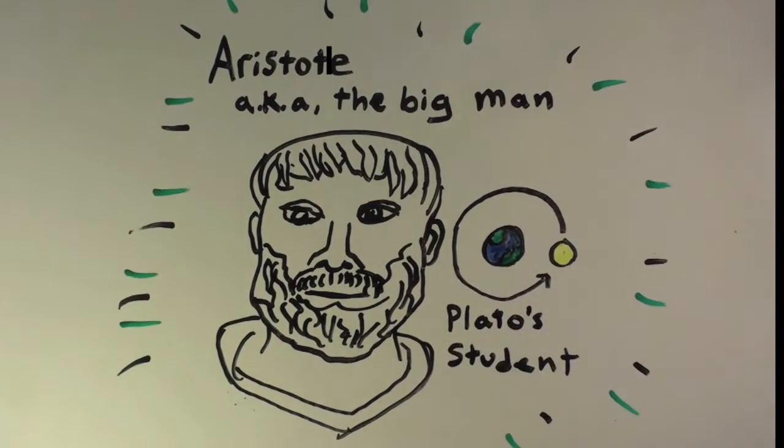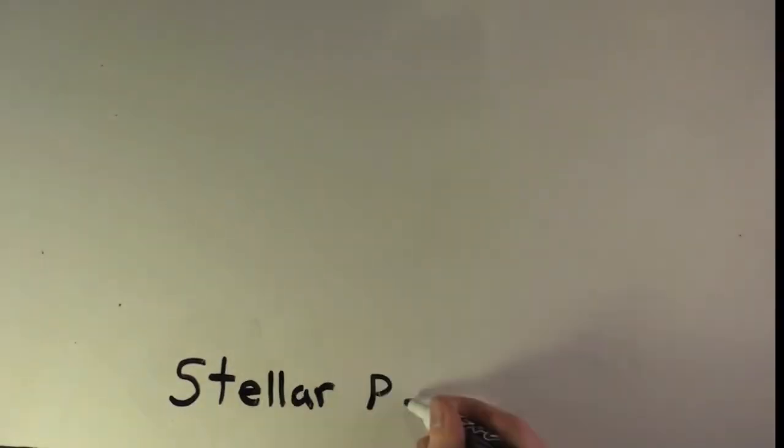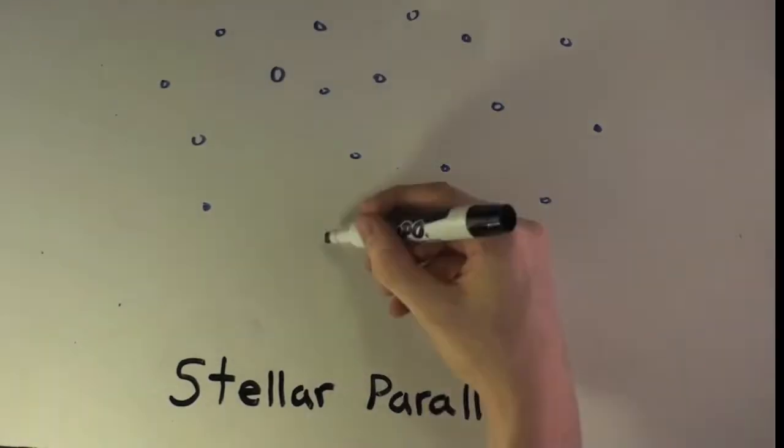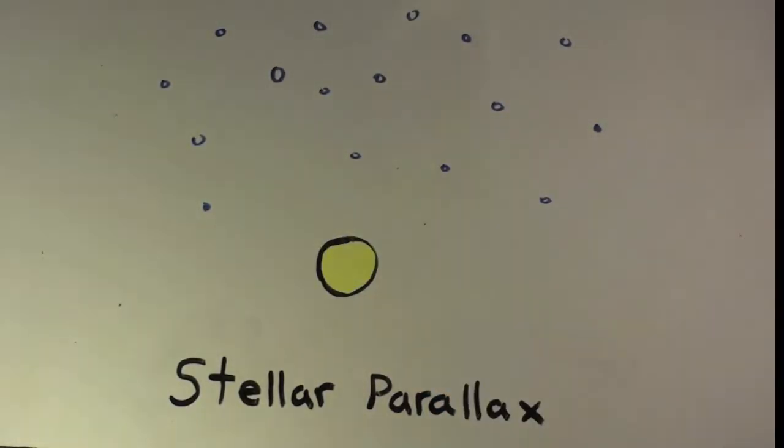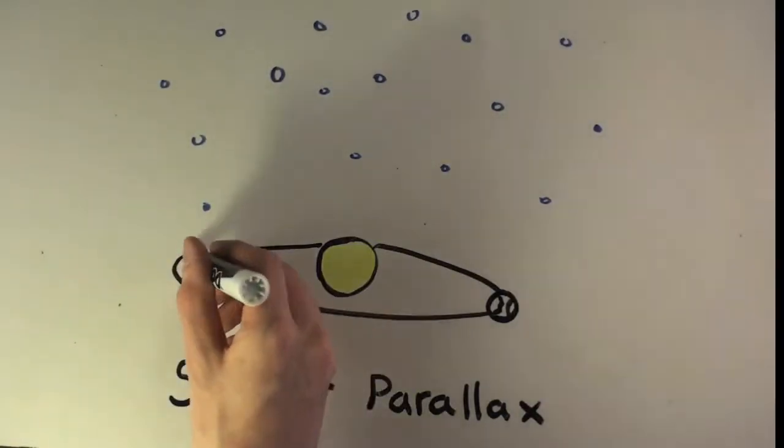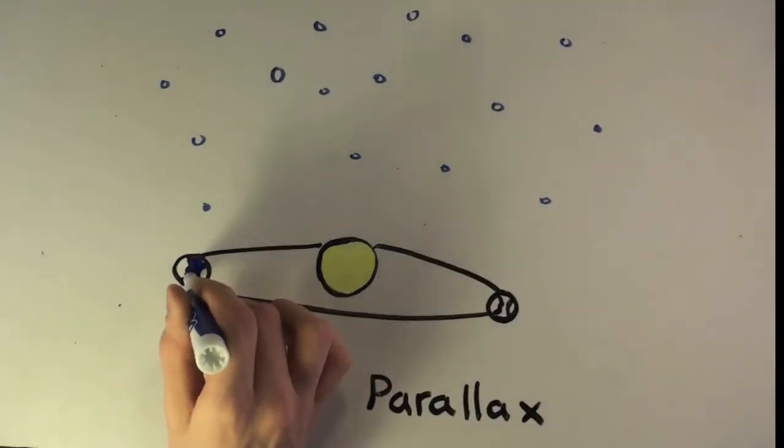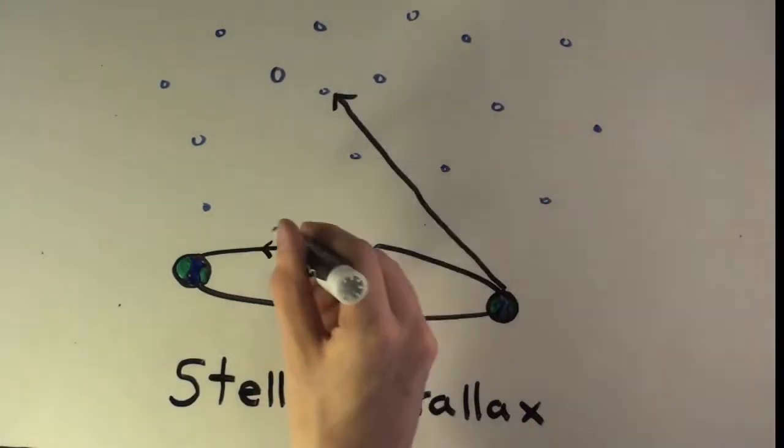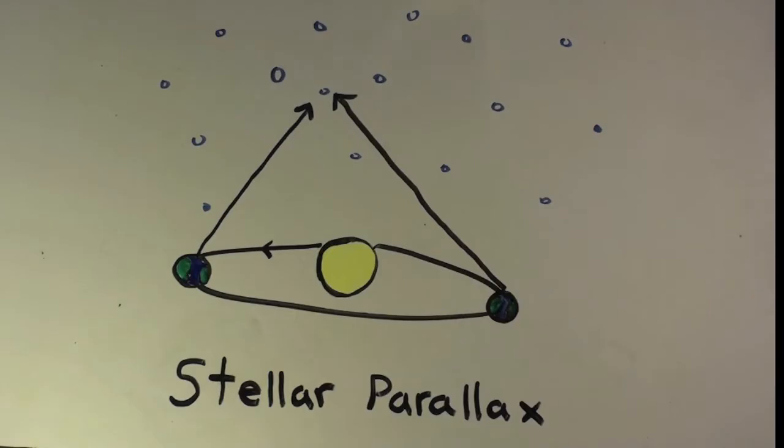Parallax is the phenomenon that makes an object appear to have moved after having been viewed from two vantage points. The idea was that if the Earth rotated around the sun, it would change its position over time. As a result, Aristotle claimed that the stars would appear in a different place in the sky at different points along the Earth's rotation because they would be being viewed from different vantage points.